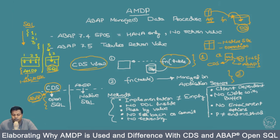To clarify: CDS views and OpenSQL views are not HANA database dependent. If you have another database running ABAP, you can use CDS views or execute OpenSQL there. However, AMDP is HANA database specific — you cannot use AMDP if you have a DB2 or Sybase database linked to your application server. Only with SAP HANA database can you use AMDP, because AMDP uses native SQL.